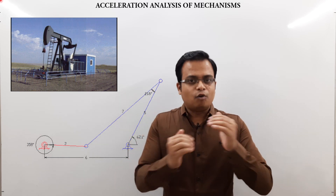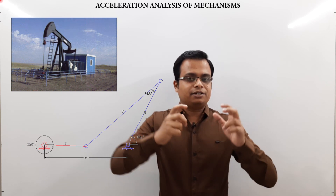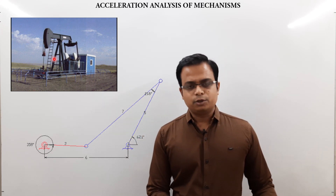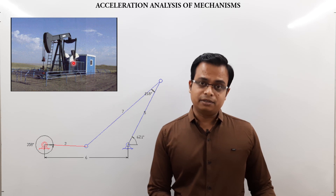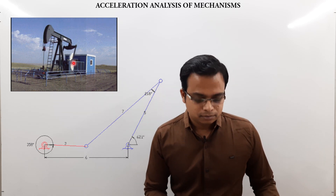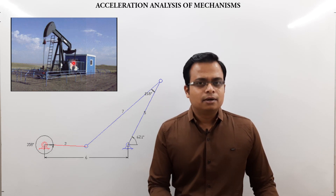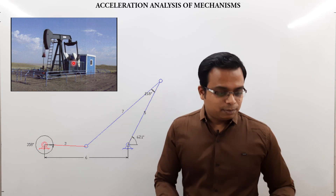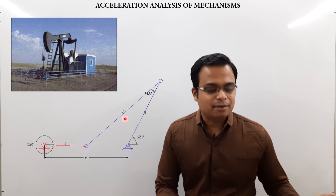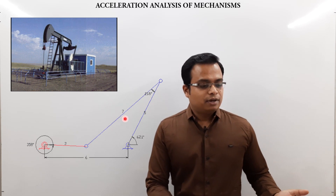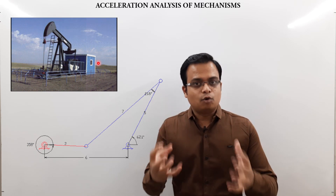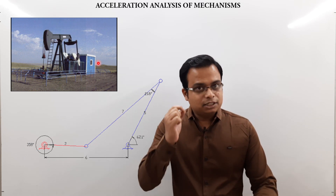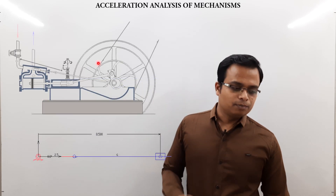Today is a very elementary class — we'll be analyzing a link and what sort of accelerations are associated with it. First, take a look at this: I'm sure you must have seen a pump jack mechanism, often shown in news channels reporting crude oil prices. This is essentially a four-bar mechanism employed in a pump jack for the extraction of oil from oil wells.